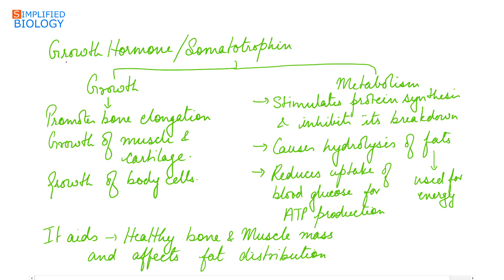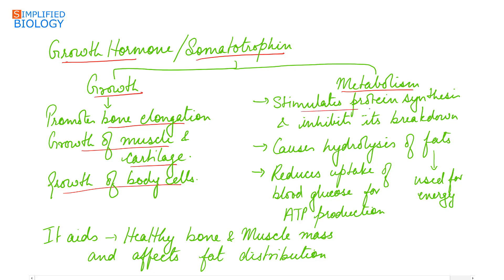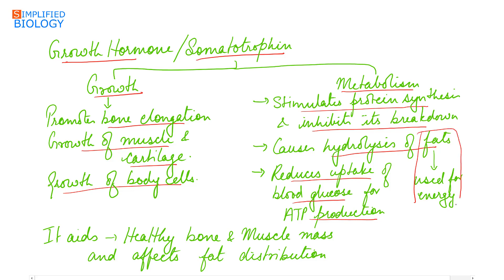Growth hormone, also known as somatotropin, is responsible for growth and metabolism. It promotes bone elongation, growth of muscles and cartilage, and body cells. It stimulates protein synthesis and inhibits its breakdown — that is, protein anabolism. It also causes lipolysis (breakdown of fat) and reduces uptake of blood glucose for ATP production, as fat is used for energy.